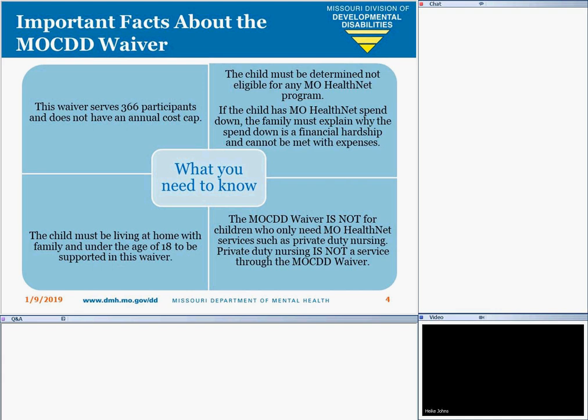The child must be at home with family and under the age of 18 to be supported in this waiver. If the child is out of the parent's home for more than 30 consecutive days — say in a hospital or treatment facility — then parents will be excluded for eligibility and the child should be MO-HealthNet eligible. It is important that parents report this to Family Support Division. The MO-KID waiver is not for children who only need MO-HealthNet services such as private-duty nursing, which is not a service through the MO-KID waiver.